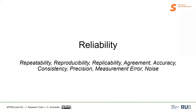We'll start with reliability. There are many related terms: repeatability, reproducibility, replicability, agreement, accuracy, consistency, precision of a measure. Conversely, we also talk about measurement error or noise. All these terms are relevant and often used interchangeably when we talk about reliability.